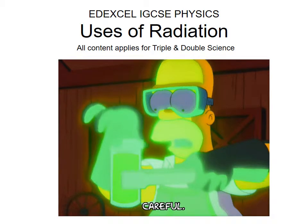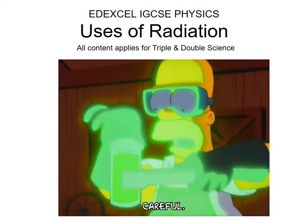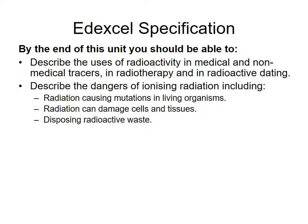Now we've looked at the different forms of radiation — alpha, beta, and gamma — let's have a look at how we can use their properties practically in industry and to assist us. Two major points for today: we're going to look at the uses of radioactivity and how the different properties of the radiations can lead to those uses, and also describe the dangers of ionizing radiation.